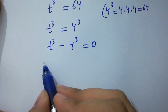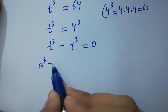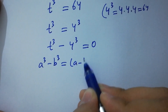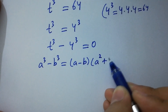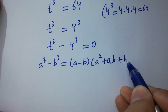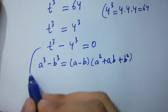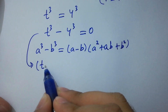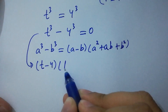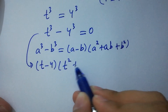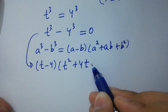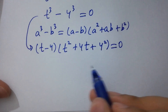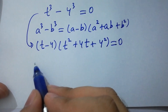We know the formula for a cubed minus b cubed, which equals a minus b times a squared plus ab plus b squared. Applying this, we have t minus 4 times t squared plus 4t plus 4 squared equals 0.